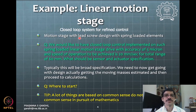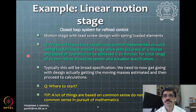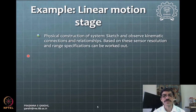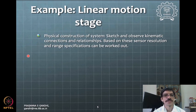Considering the lead screw, one can do some kinematics. The first step is a physical construction of the system in sketch form, observing kinematic connections and relationships. This is straightforward for a linear motion stage but may become more complex for complicated problems. A similar approach will be shown for a 2R manipulator as another example.